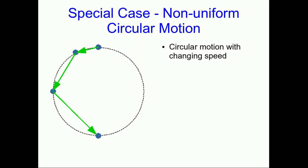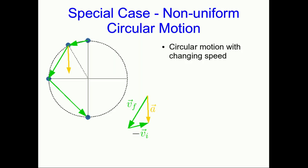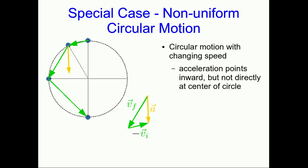A final special case is non-uniform circular motion — circular motion with a changing speed. In a motion diagram where the object is speeding up as it goes around a circle, vector subtraction shows the acceleration still points inward but not directly toward the center. Because the object is speeding up, there's a forward component of acceleration, and there's still an inward component because the trajectory is curved — requiring a component of acceleration pointing to the inside of the curve.